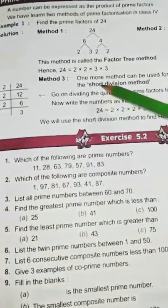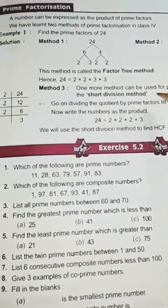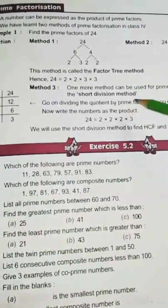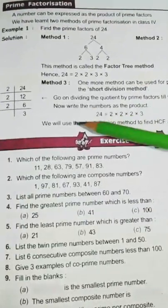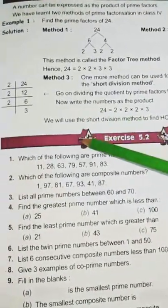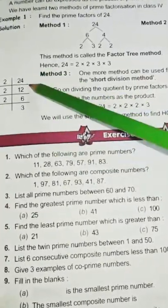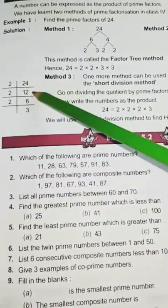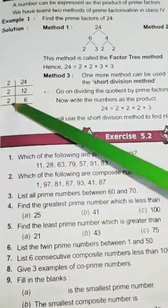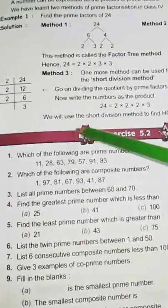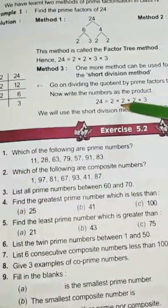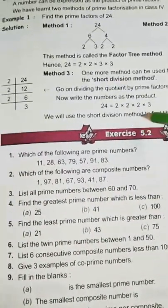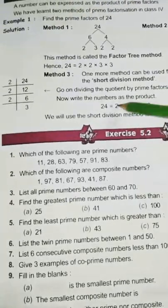Then third method. One more method can be used for prime factorization called the short division method. And it is very easy also. So, first, you write like this, 24 means 2 multiplied by 12 equal to 24. Then, 12 means 2 times 6 is 12. 6 means 2 times 3 is 6. Then, 24 equal to 2 × 2 × 2 × 3 or 2³ × 3. This is the factors of 24.